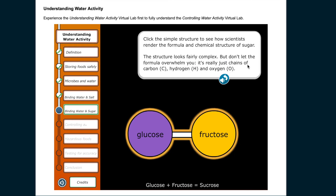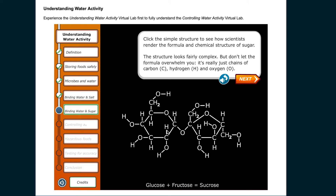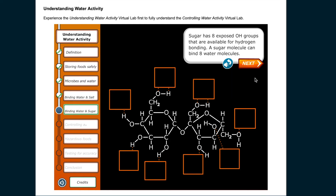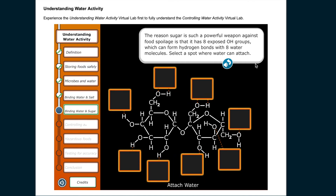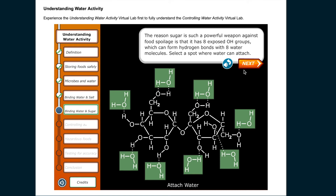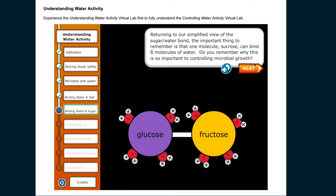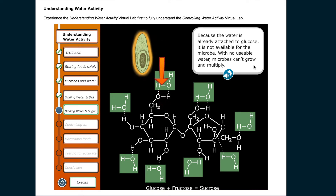The sugar structure is really just chains of carbon, hydrogen, and oxygen. Sugar has eight exposed OH groups that are available for hydrogen bonding, so a sugar molecule can bind eight water molecules. The reason sugar is such a powerful weapon against food spoilage is that it has eight exposed OH groups which can form hydrogen bonds with eight water molecules. Because the water is already attached to sucrose, it is not available for the microbe — with no usable water, microbes can't grow and multiply.